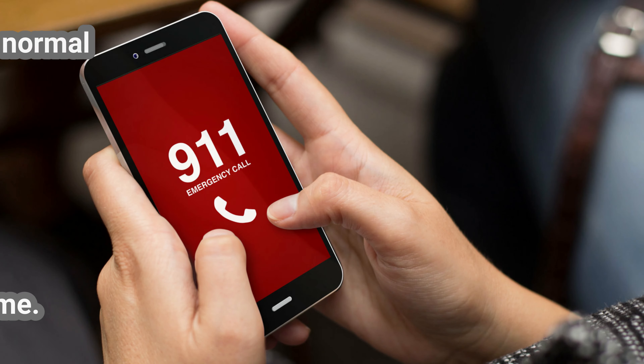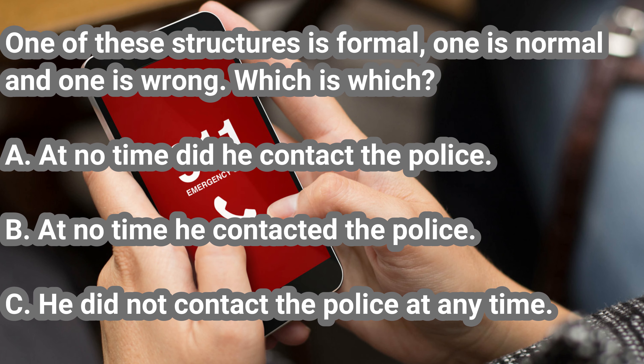The answer is A is formal, B is wrong and C is normal. We can all see that C has no problems — it's normal. The real difference is between A and B. This question is really about something called inversion, which means using the auxiliary verb before the subject, not the usual subject-verb order. In A we did this inversion. We said 'at no time' — now notice — 'did he contact,' not 'he contacted' as in B.